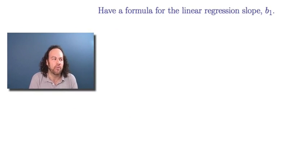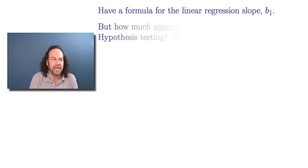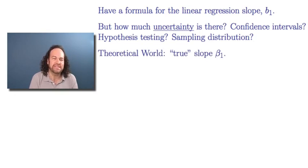So let's consider that. To set it up, let's first of all concentrate on the slope, because that's usually more important. And we have a formula for the B1, the regression slope that we get from the data. And the question is what's the uncertainty? Can we get confidence intervals? Can we do hypothesis testing for the true value of the slope?